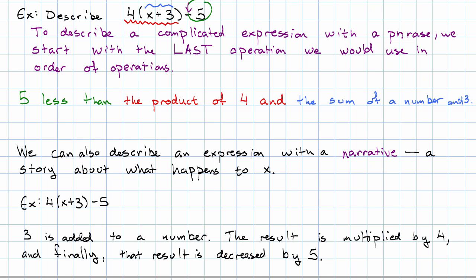So notice the difference between these ways of phrasing. This is a phrase. There's no verb there. This on the other hand is a story. There are several sentences in which things happen one after another. The phrase reverses the order of operations. So the operation that we did last, we named it first. The story, on the other hand, follows the order of operations.